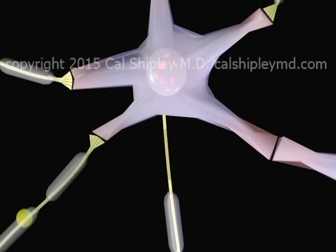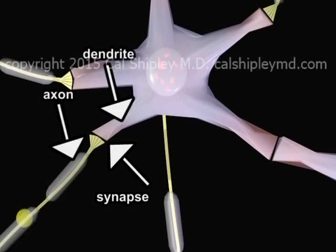The electrochemical impulses are transferred from one neuron to another at junctions known as synapses. Typically, the synapse occurs between the axon of one neuron cell and the dendrite of another, but synaptic junctions may also occur between dendrites or between axons.